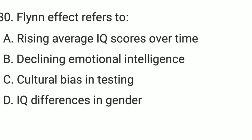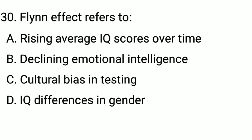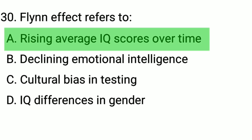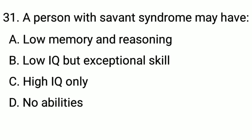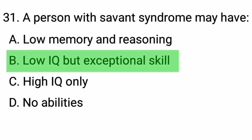Q30. The Flynn effect refers to... The correct option is option A: rising average IQ scores over time. Q31. A person with Savant syndrome may have... The correct option is option B: low overall IQ but exceptional ability in a specific area.